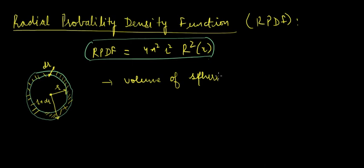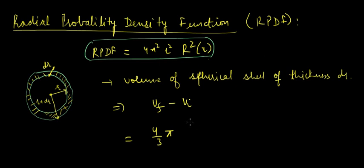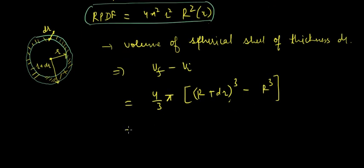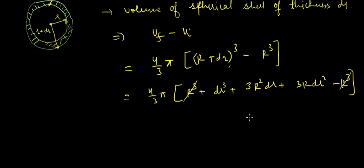...would be V_f minus V_i, which is 4/3 π(r+dr)³ minus r³. That would equal 4/3 π[r³ + dr³ + 3r²dr + 3r dr² minus r³]. The r³ terms cancel, so we're remaining with 4/3 π[dr³ + 3r²dr + 3r dr²].